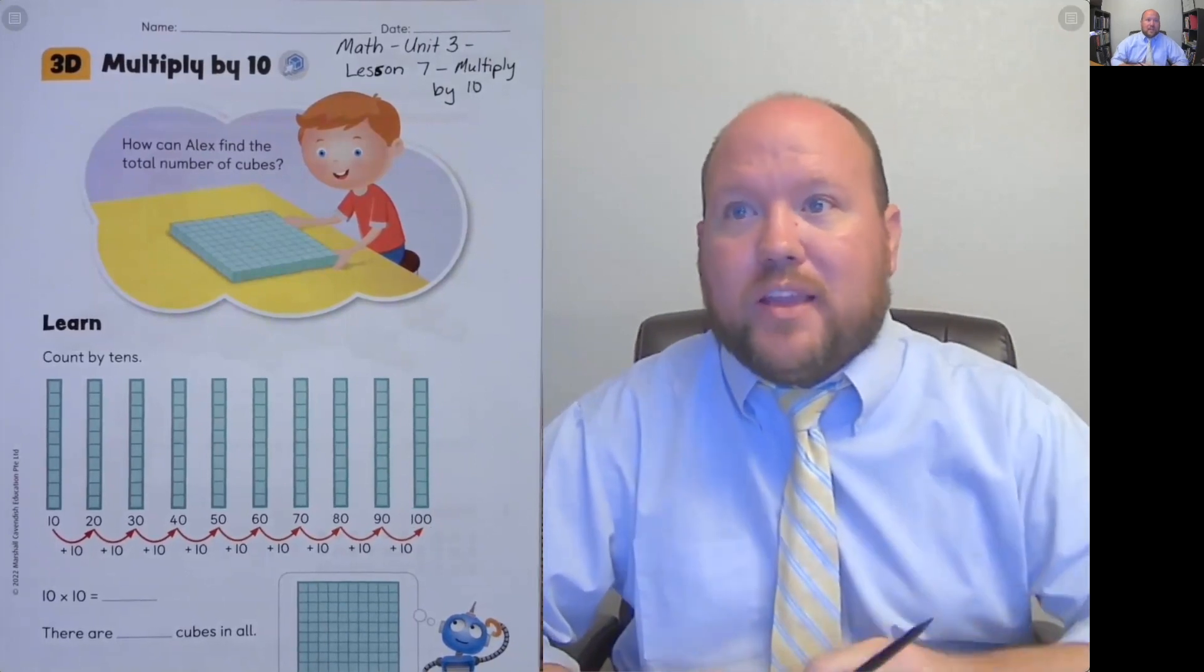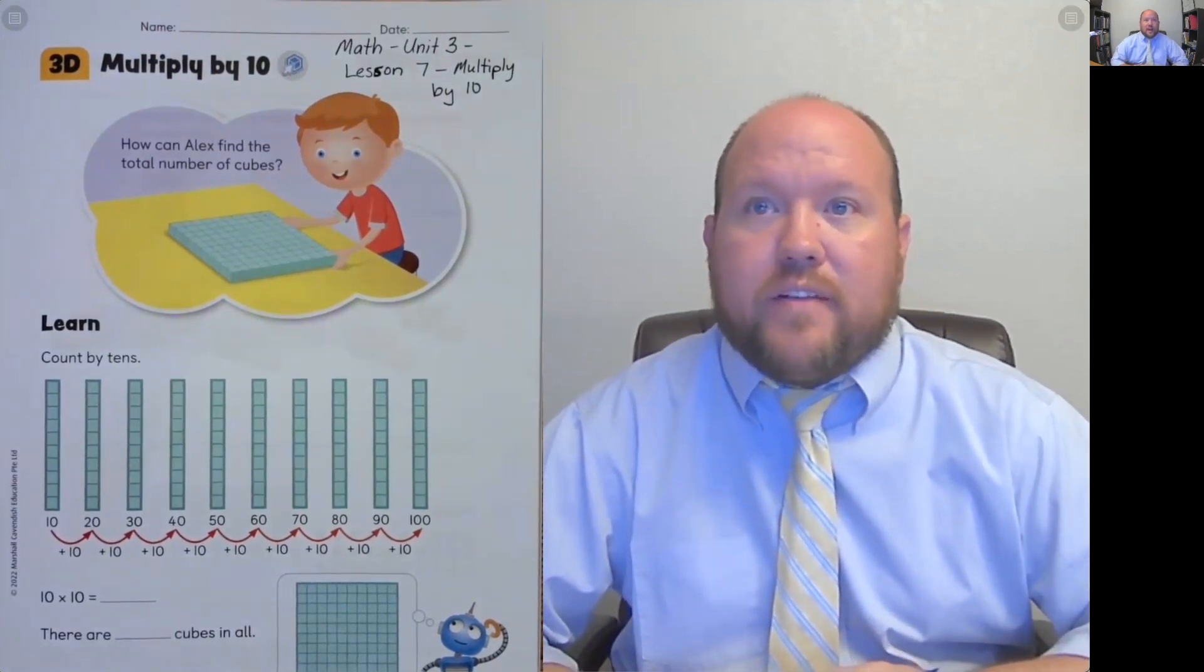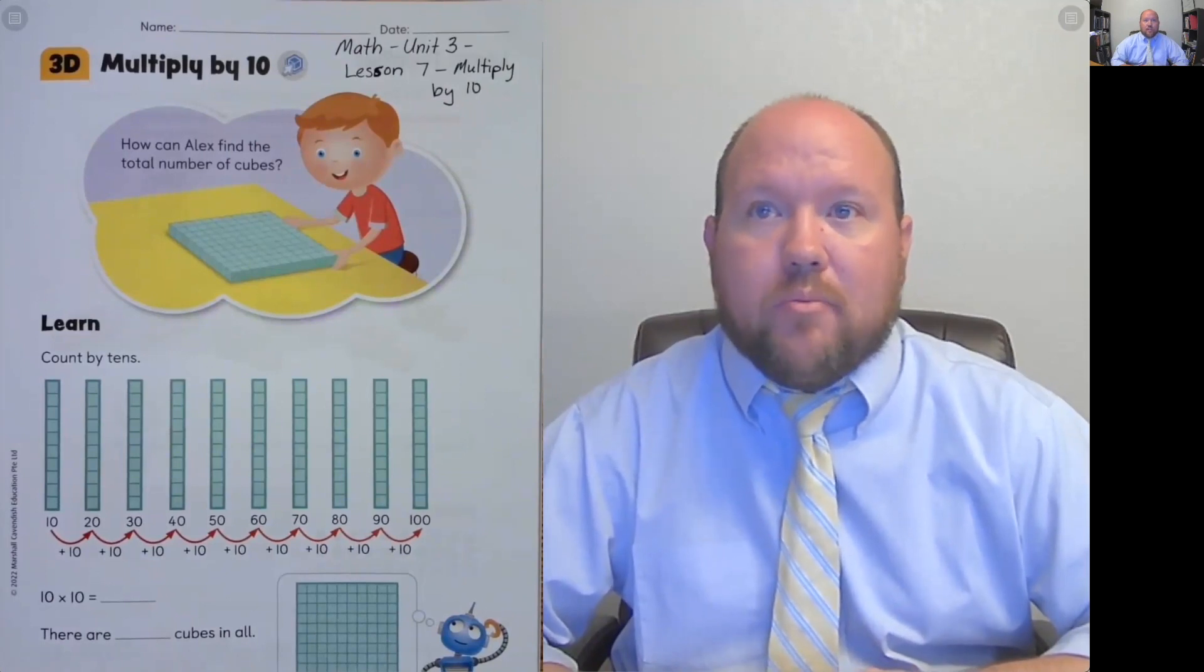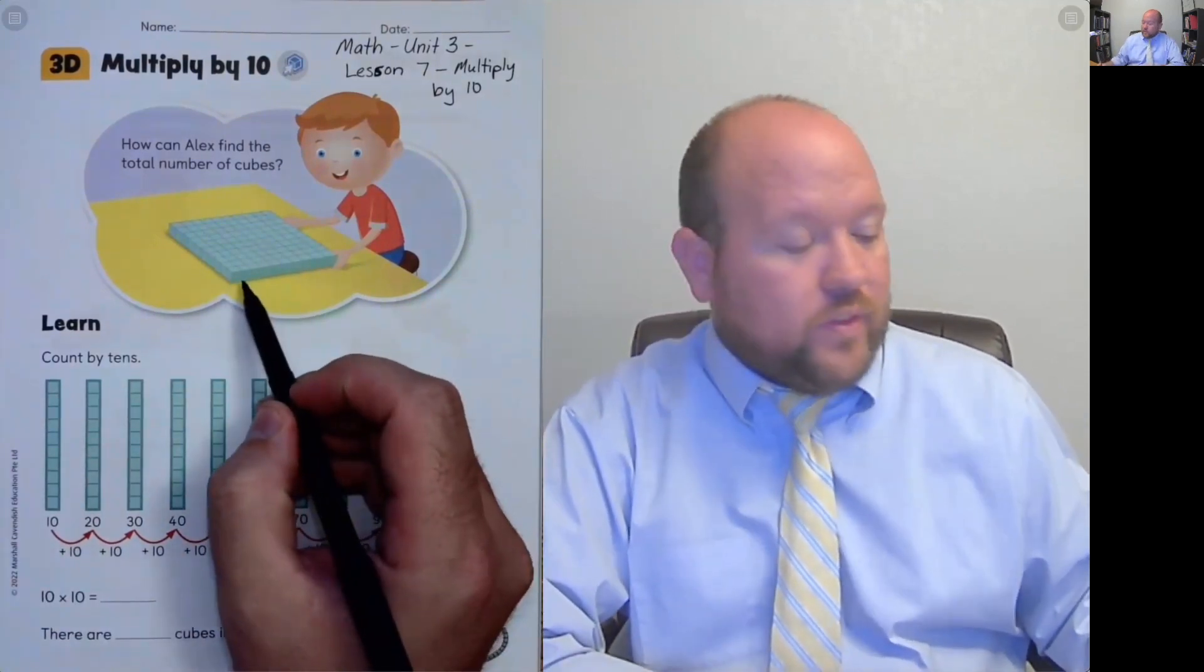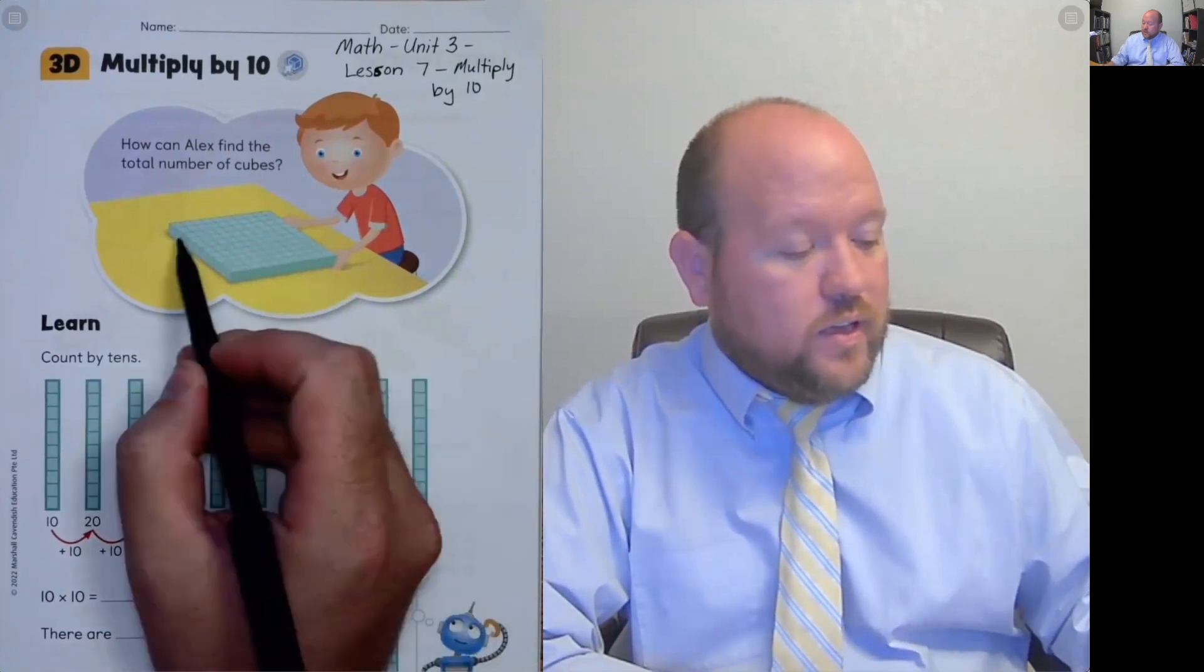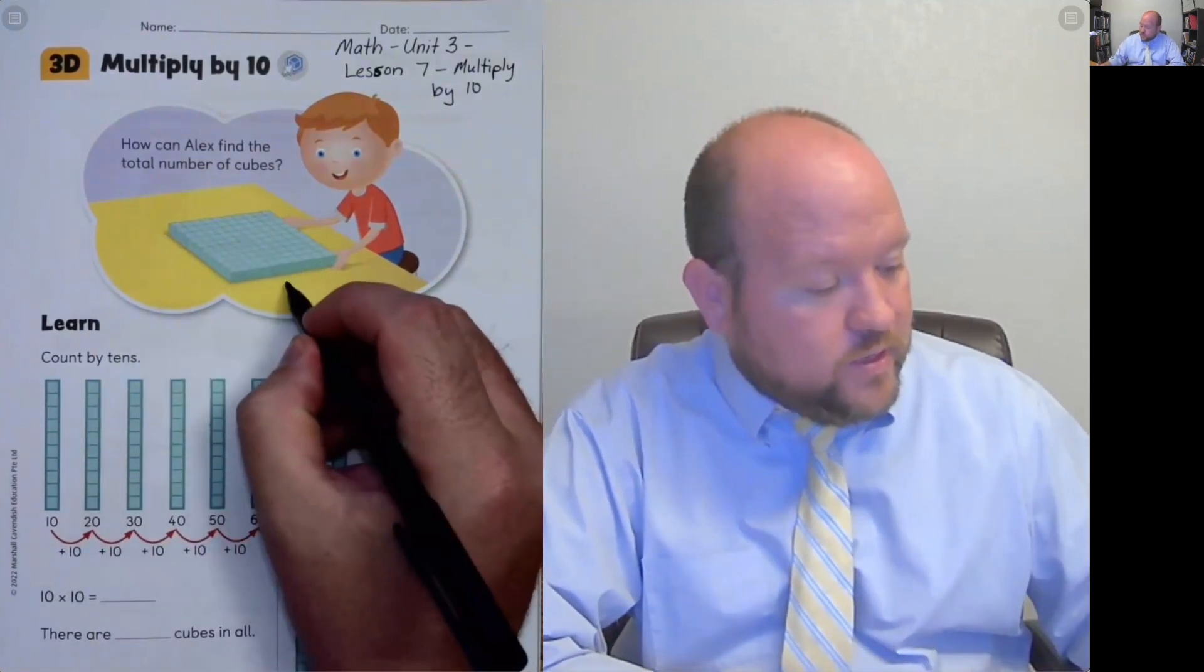So we start off with this word problem in the beginning. It says, how can Alex find the total number of cubes? Now we can see here that this is a cube and there are 10 rows and 10 columns. So it is 10 by 10.